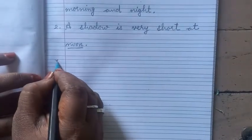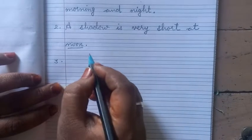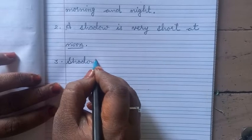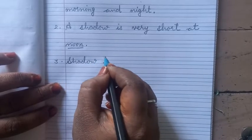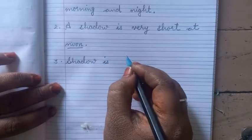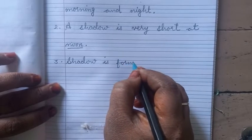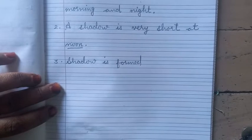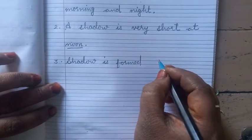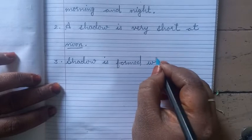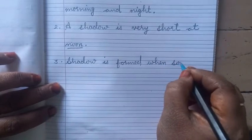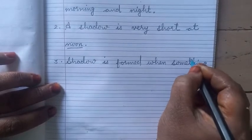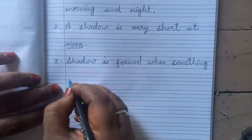Number 3. Shadow is formed when something blocks light.